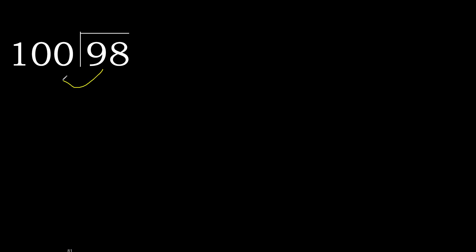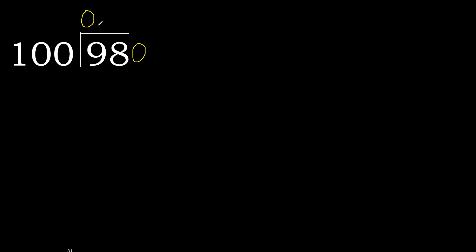98 divided by 100. 9 is less, therefore next. 98 is less, therefore next. There is no number, therefore complete — always complete with 0. Here, 0 point.